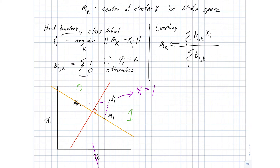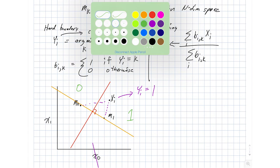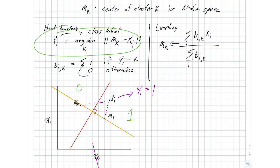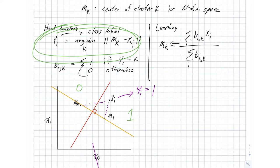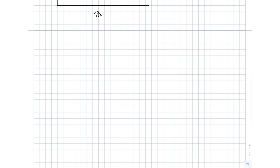The learning process is iterative. We first assign points to clusters given an initial guess at the cluster centers, then we re-estimate what the cluster centers are, and then we come back and reassign points to clusters again. We continue to bounce back and forth between these two steps until things have settled.